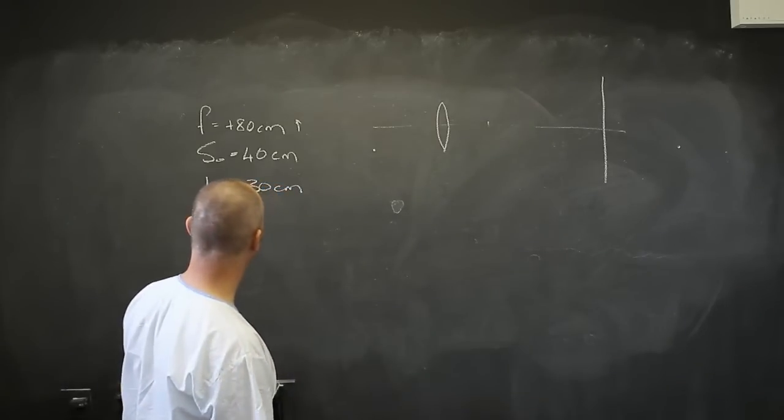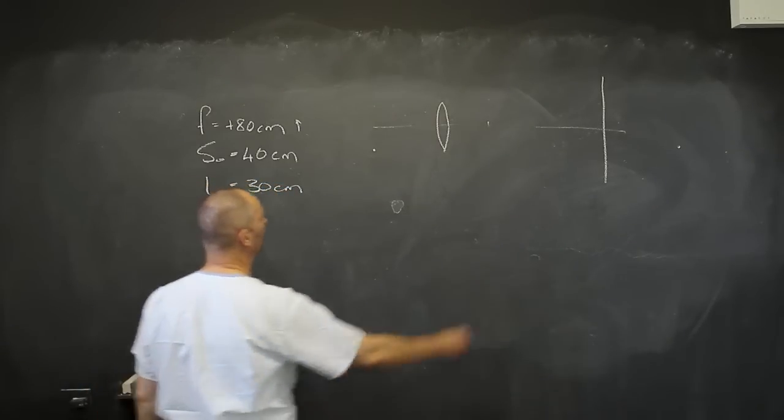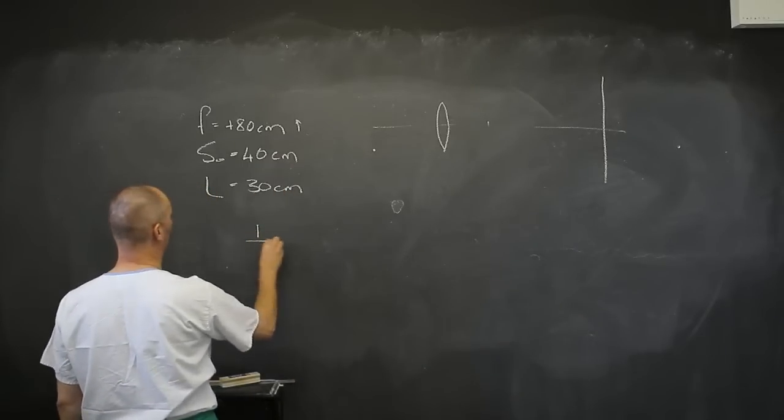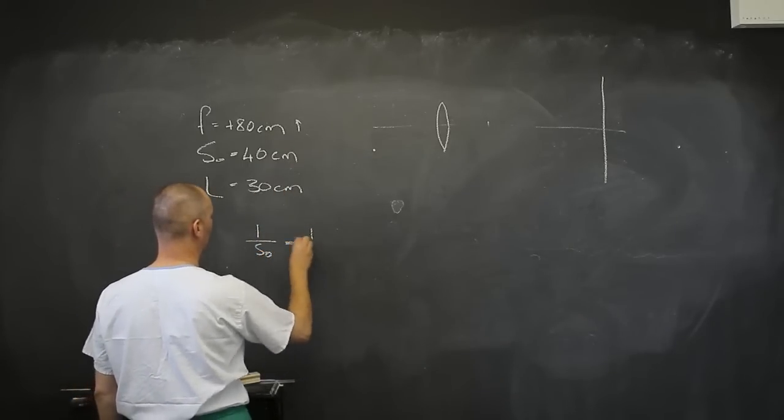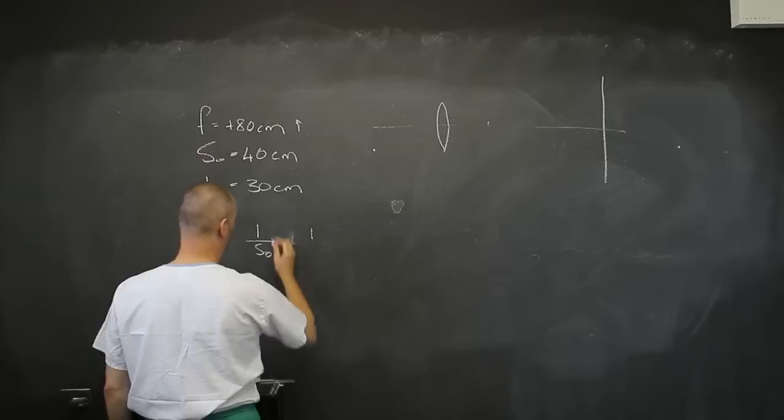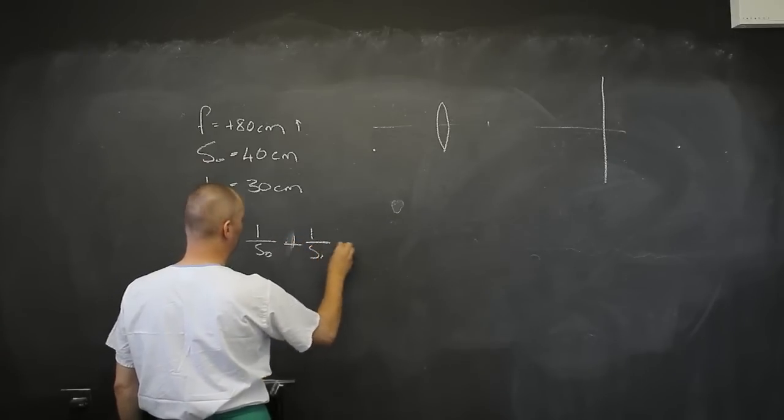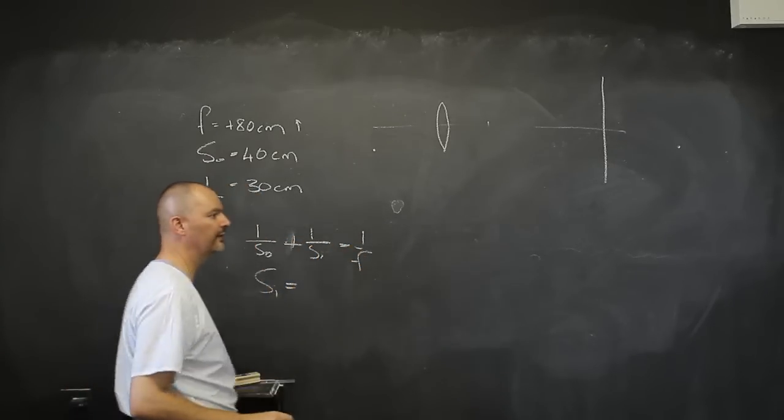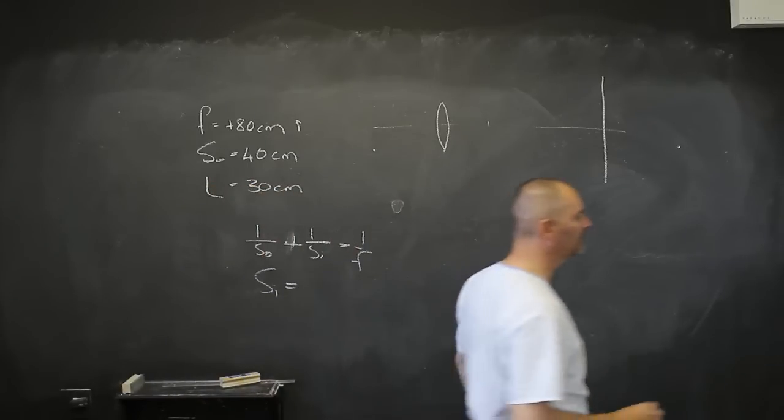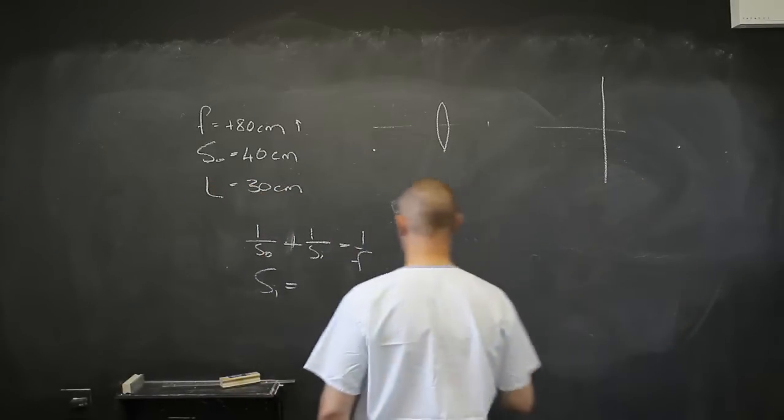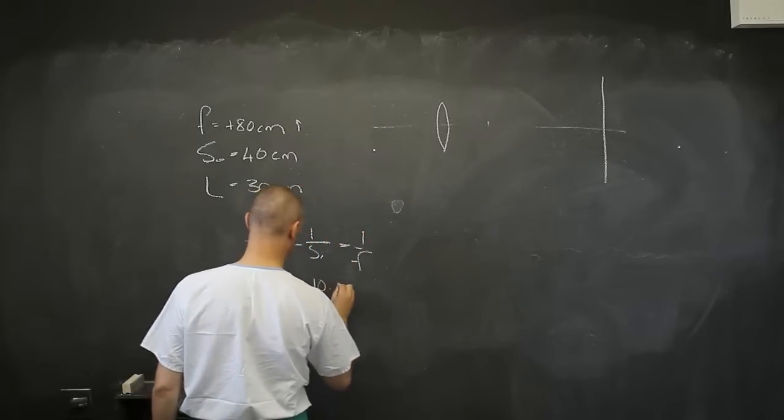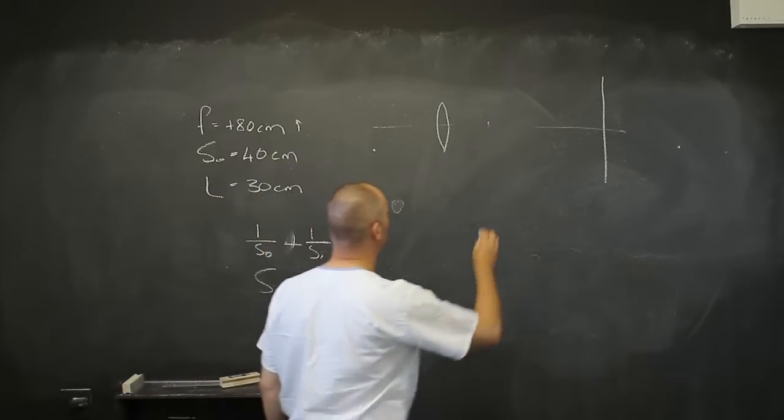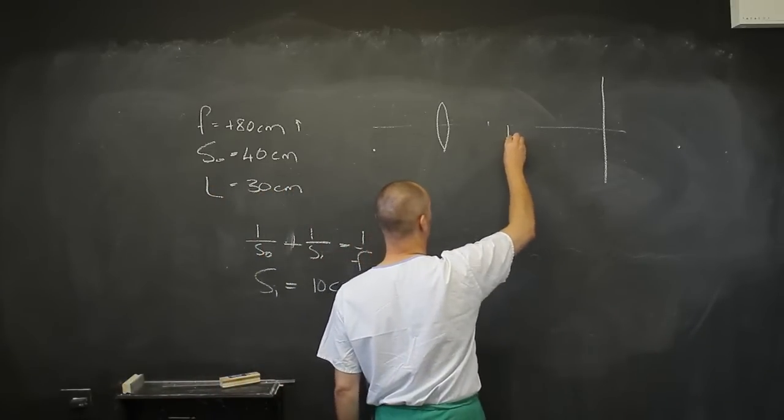Well first of all, we are going to have an inverted real image on this side. And I am going to get that from 1 over S0 equals 1 plus 1 over SI is going to be 1 over F. And that gives me an SI of 10 centimeters. So at 10 centimeters I am going to get my first image and it is going to be inverted.